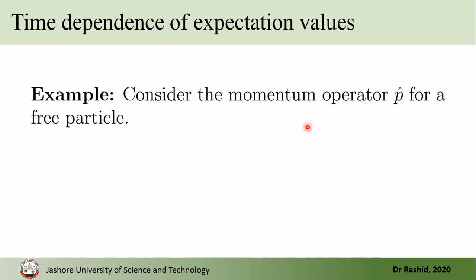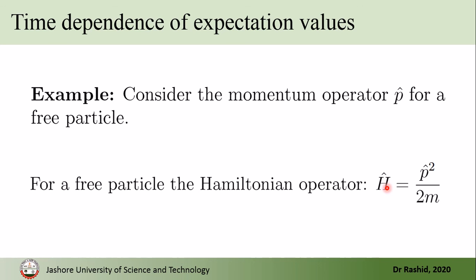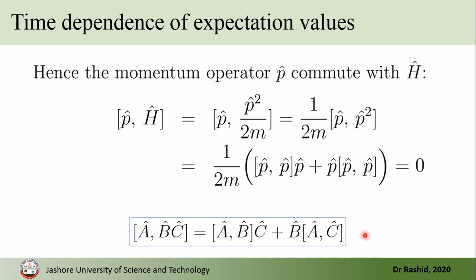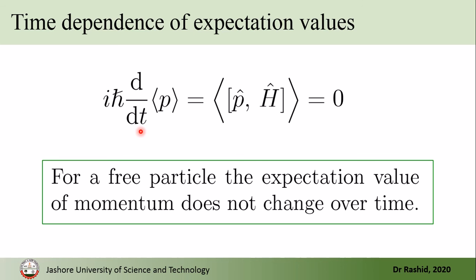As an example, we consider the momentum operator of a free particle. Since for a free particle the Hamiltonian operator has only the kinetic energy term, p-hat commutes with H-hat. It can be shown in a few lines like this, using this property of the commutator. Since this commutator is zero, we see that the expectation value of momentum of a free particle does not depend on time — that is, the expectation value of momentum for a free particle does not change.